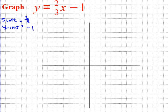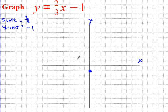When graphing a line in slope-intercept form, we always want to start at our y-intercept — it just makes our life a lot easier. Because my y-intercept is negative 1, I can find that on my graph easily. This line is going to cross the y-axis at negative 1, which is right here. So there is my starting point. Now I'm going to use my slope from that starting point. Because slope is rise over run, the 2 represents my rise and the 3 represents my run.